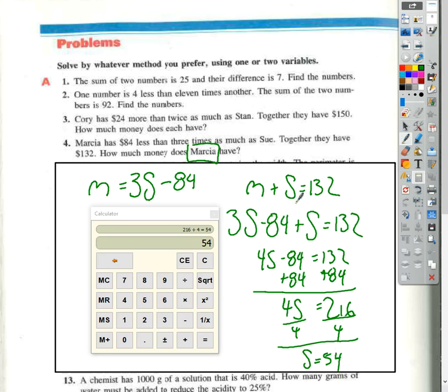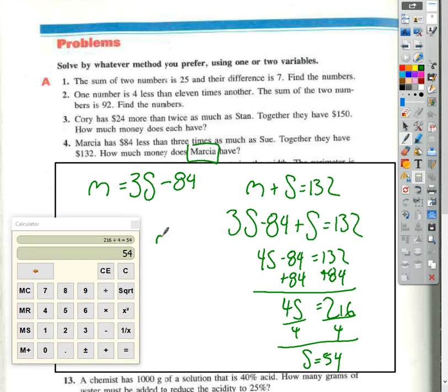And so let's plug that in. So then plug that in for here. So I get M plus 54 is equal to 132 minus 54, and I get M is equal to 132 minus 54. I get 78. Now that makes more sense.